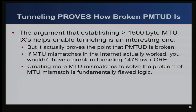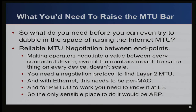The argument that jumbo frames help tunneling — having a link that supports something bigger than 1500 bytes makes it easier to implement a tunnel — is interesting, but it actually proves that path MTU discovery is fundamentally broken. If MTU mismatches worked properly, you wouldn't have a problem tunneling under 1500 bytes. All you're really doing is creating more MTU mismatches to try to solve the problem of MTU mismatches, making things worse.